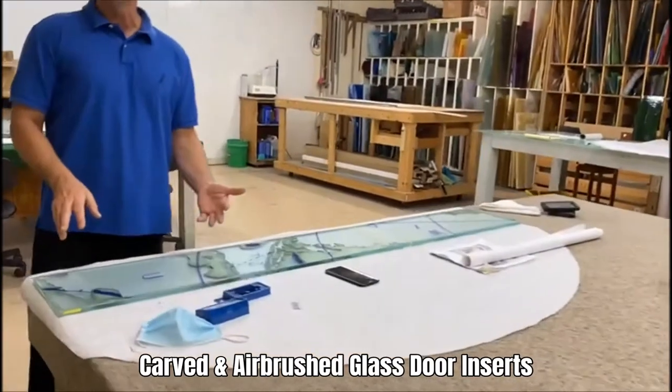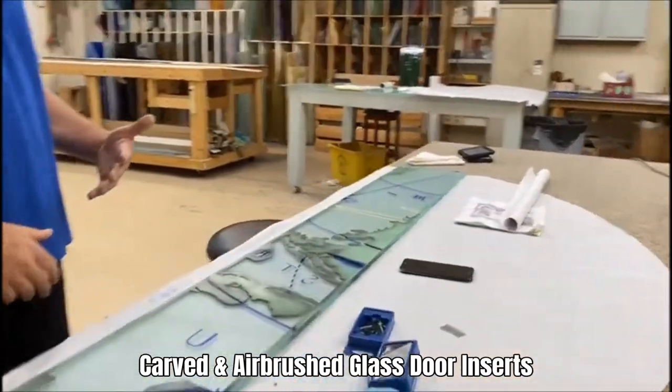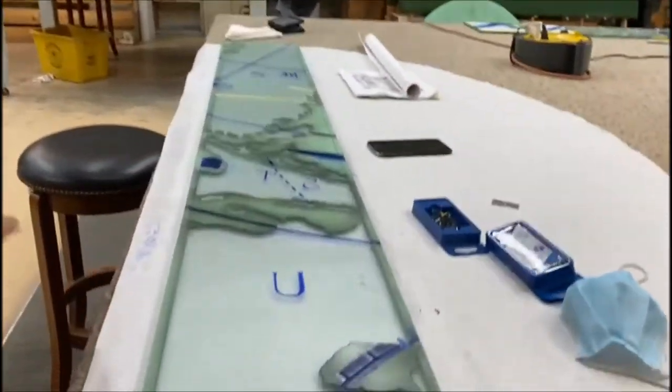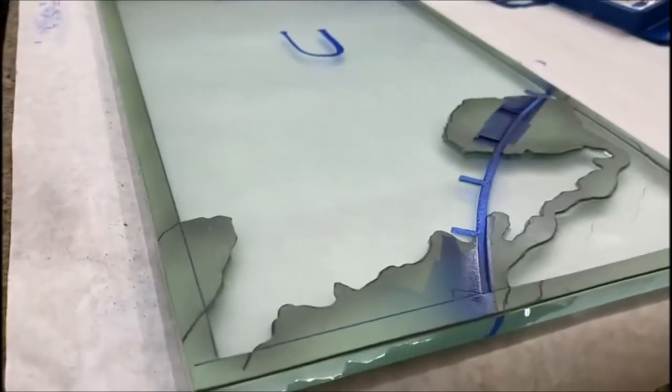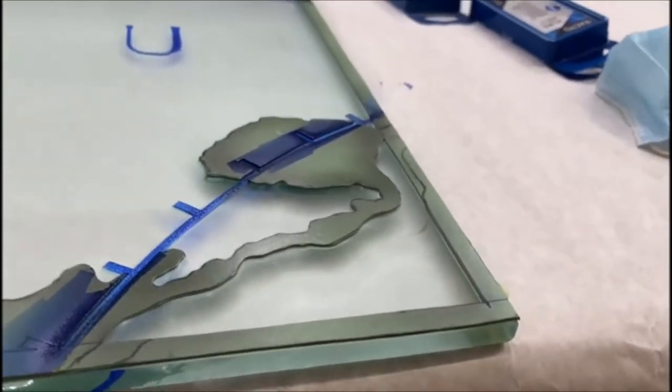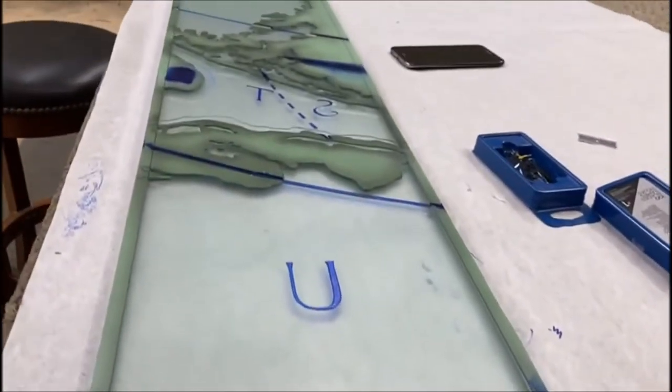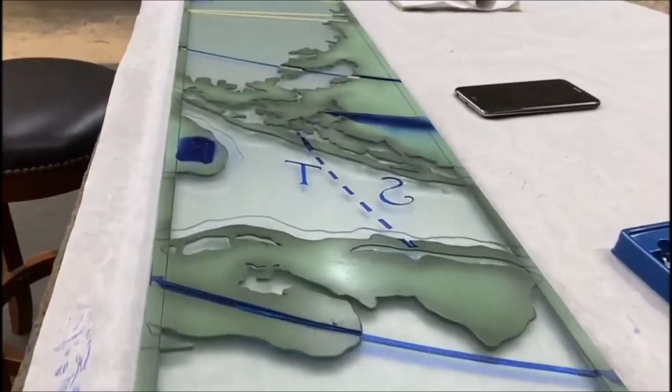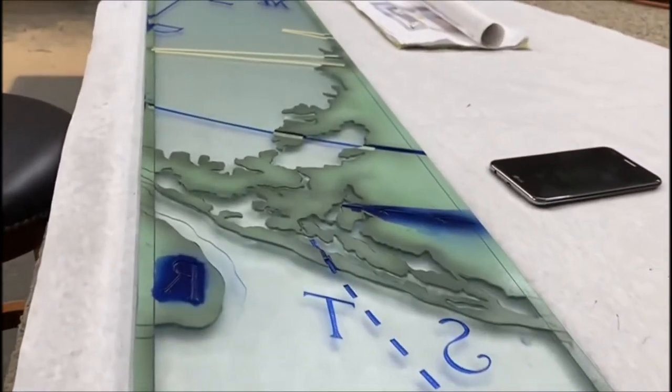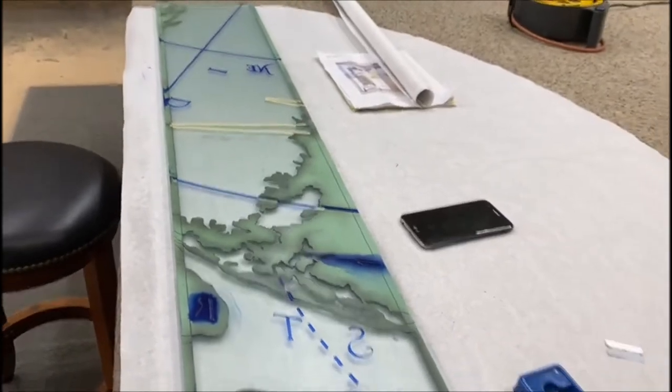These are the master bedroom doors. It's a pair of doors. This is one. It is a close-up of the Straits of Florida, of the map of the Straits of Florida between Key West and Cuba.